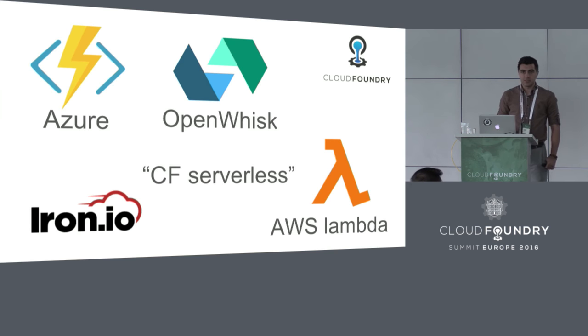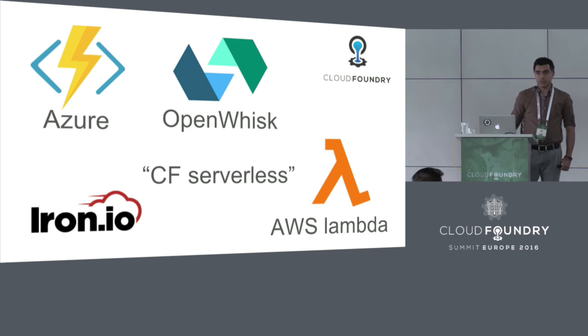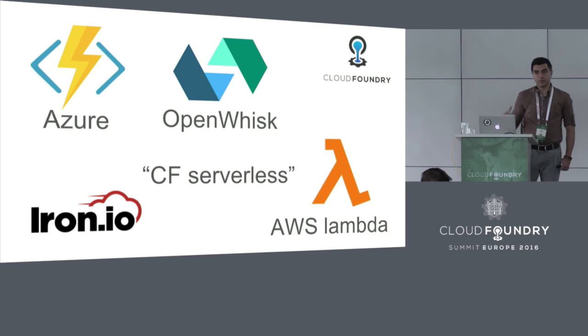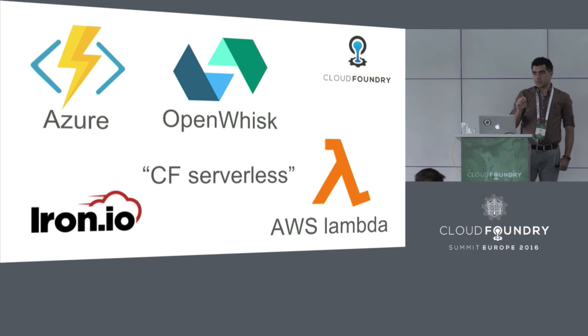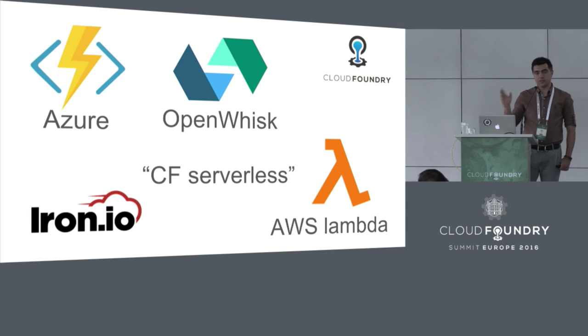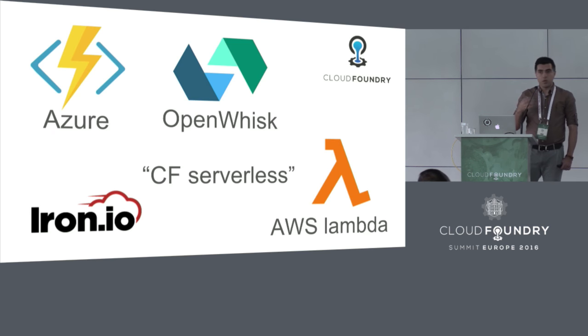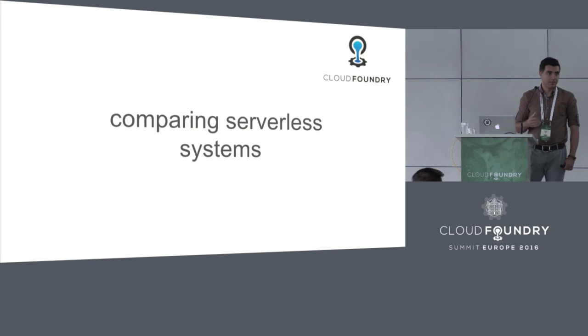We implemented CF Serverless as an application on top of Cloud Foundry, which can turn off and turn on other applications. If you have a function that you want to run in a serverless manner, you deploy it as a Cloud Foundry application. Then there's a layer on top that manages that application. When requests come in, it starts the application, brings it up, responds to your request. And then if the application is idle for some time, it takes the application down, saving resources and essentially saving money.